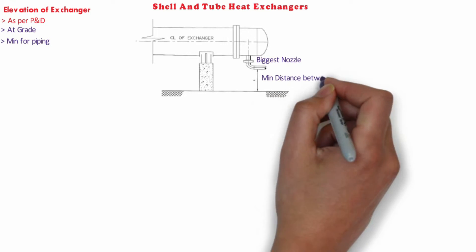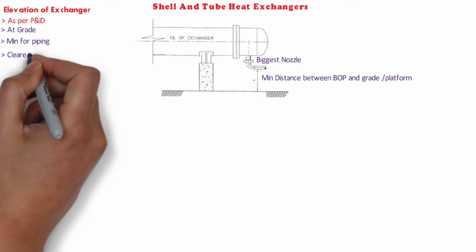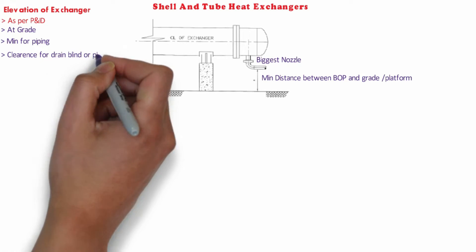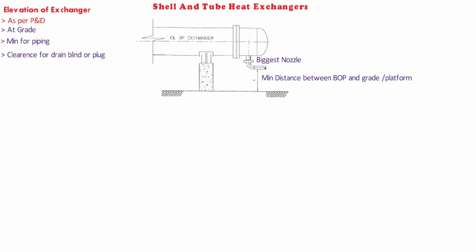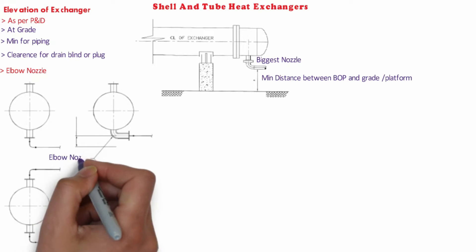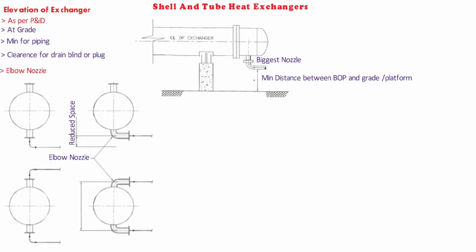The figure shows the typical heat exchanger elevation setup. Clear distance between the blinded or plugged drain in this line should be as per piping design standard; however, project specification shall govern this clearance. It can be optimized by using an elbow nozzle instead of a straight nozzle as shown in the figure. However, clearance from the platform should also be considered.